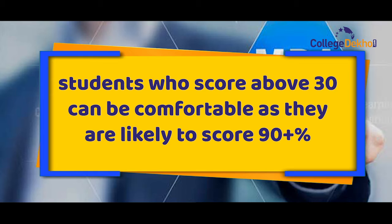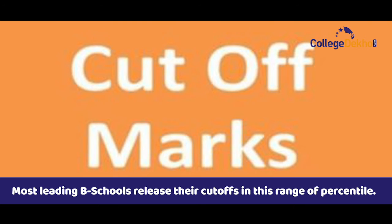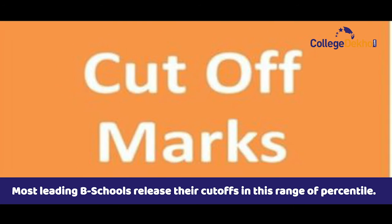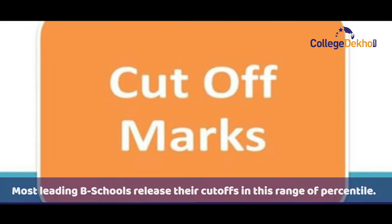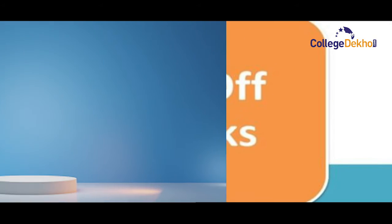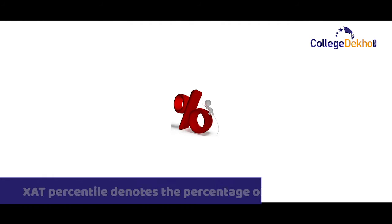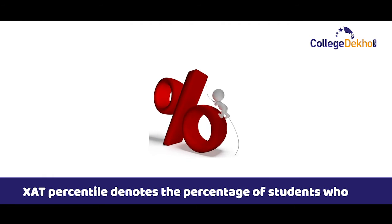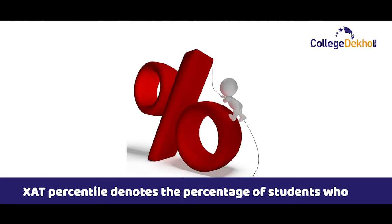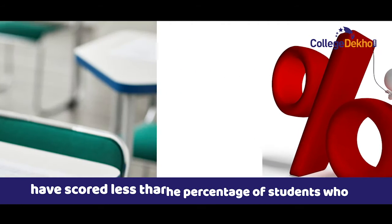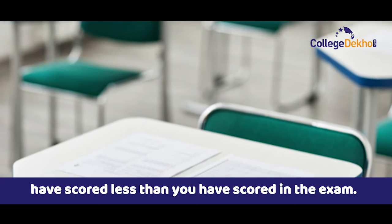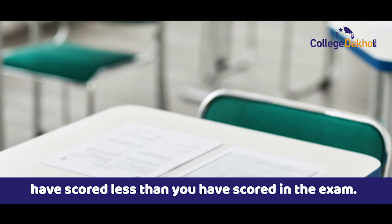Students scoring above 30 are likely to score 90-plus percentile. Most leading business schools release their cutoffs in this range of percentile. XAT percentile denotes the percentage of students who have scored less than you have scored in the exam.